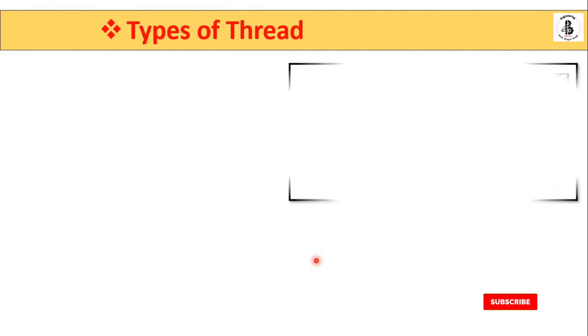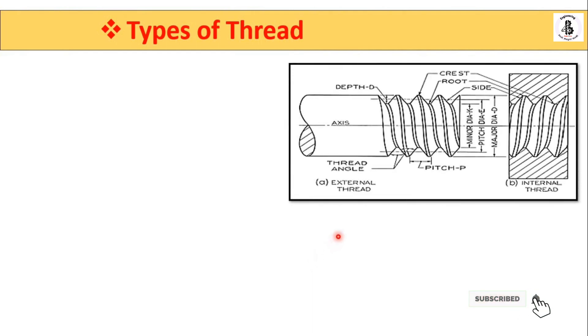There are two types of threads: external threads and internal threads. The external threads are found on the screw, and the internal threads are found on the nut.